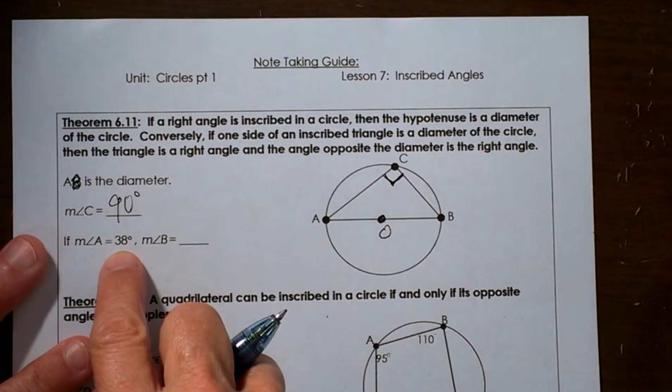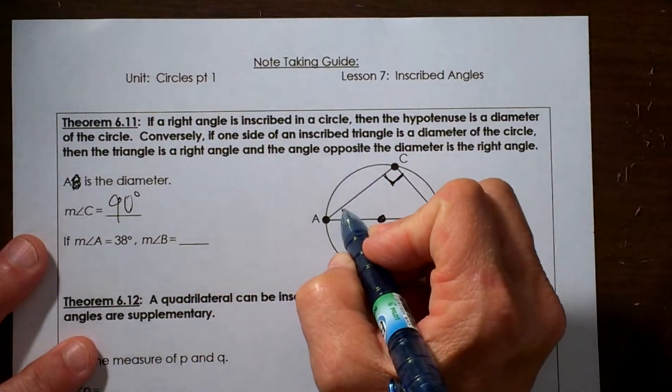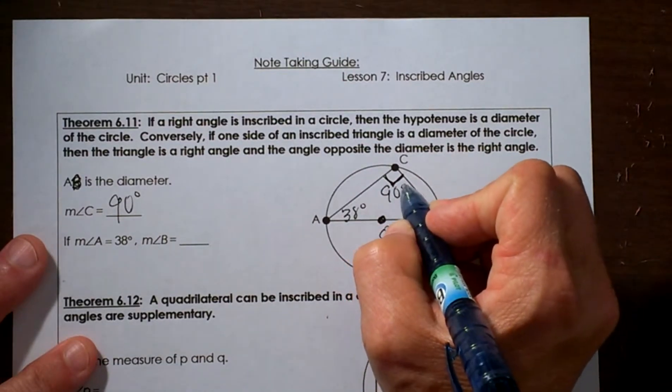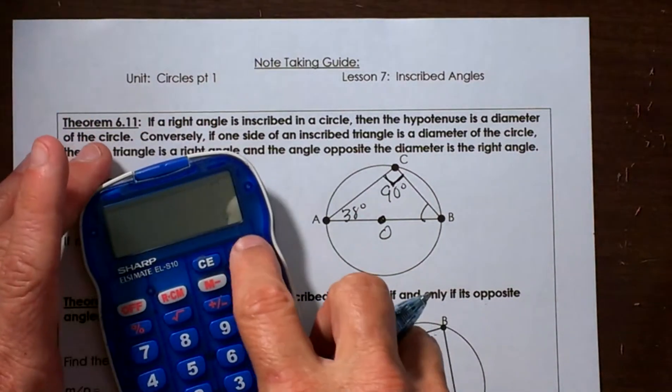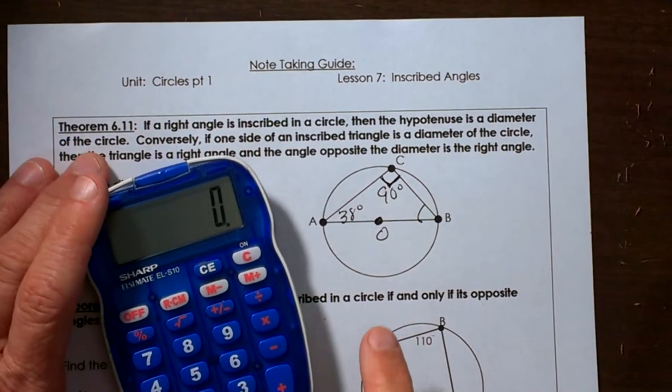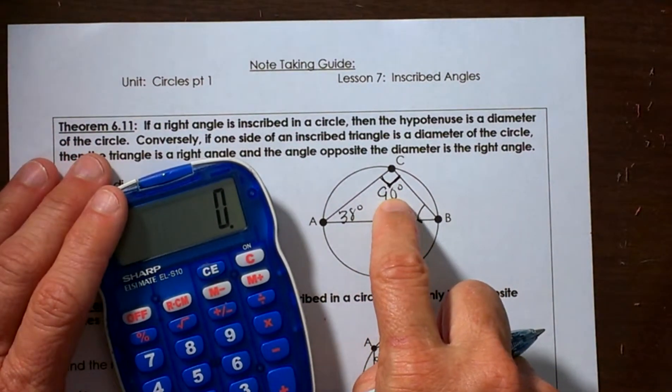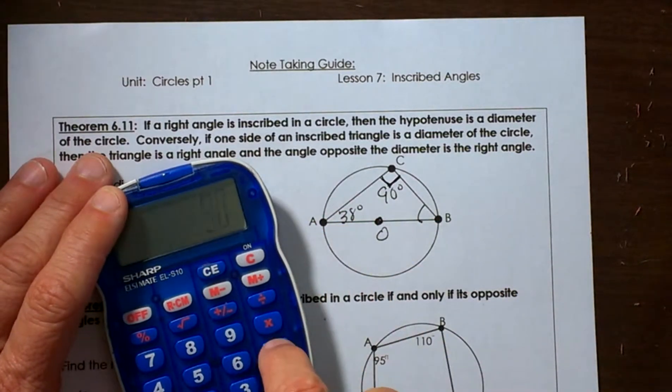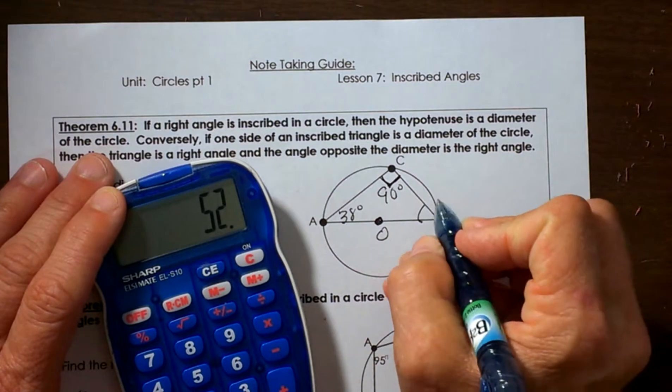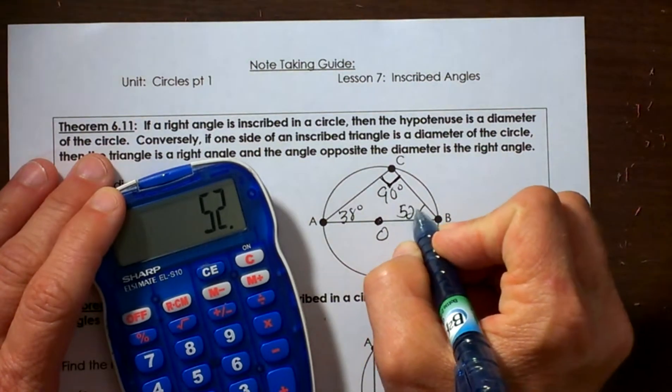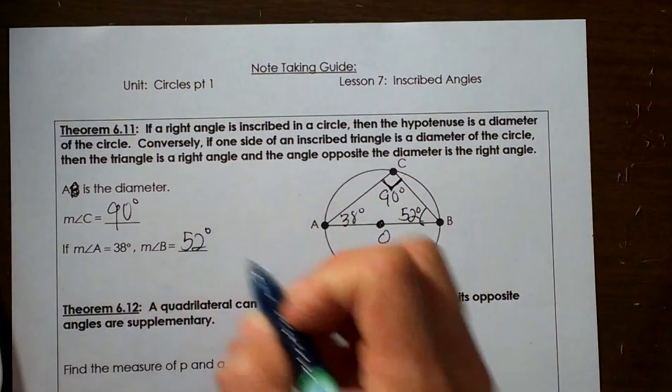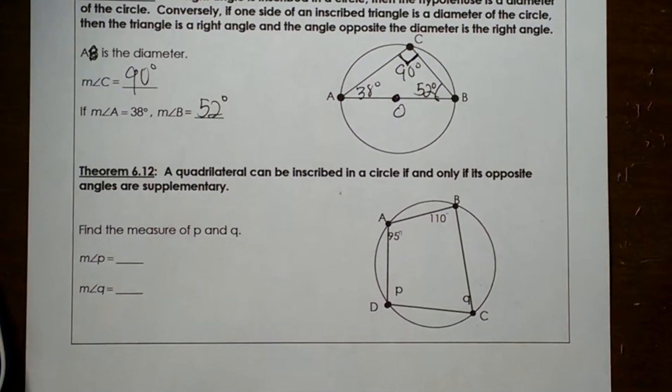If angle A is 38, how do we find angle B? Well, we use the sum of a triangle theorem. What do we know the sum of a triangle theorem says? It says that all the angles add up to 180, so if this is 90, we know the sum of these two have to be 90. So let's take 90 minus 38, and that gives us 52 degrees. So that means angle B measures 52 degrees. So there's an application of that theorem.